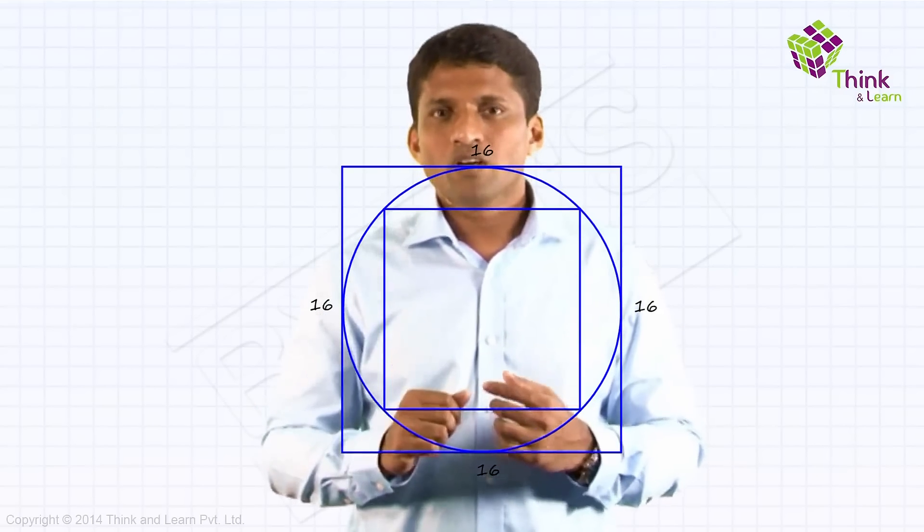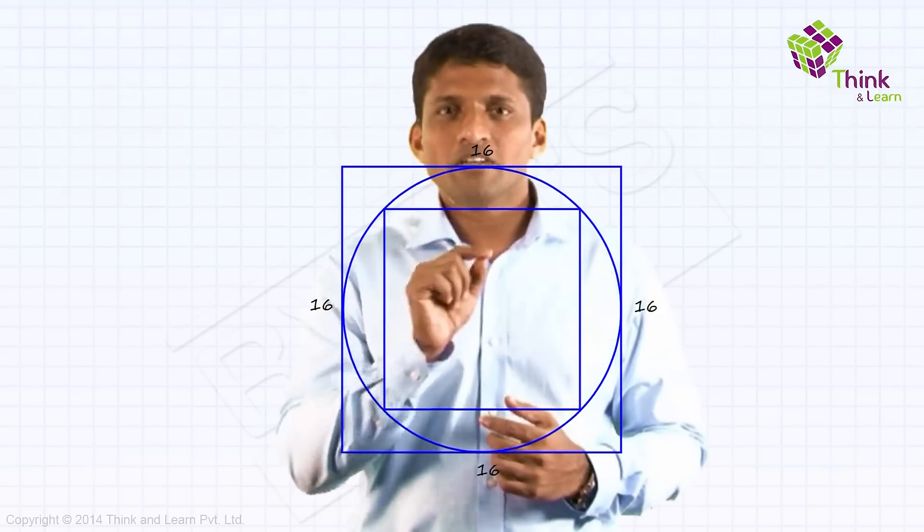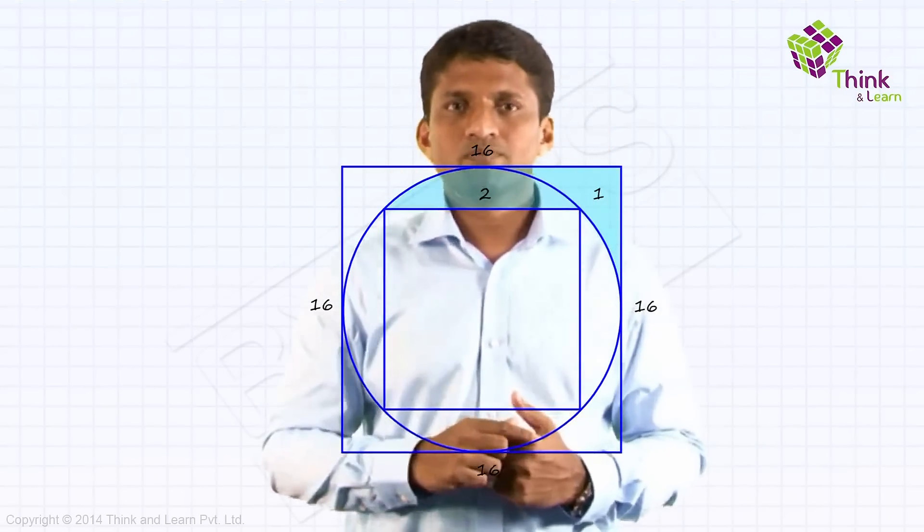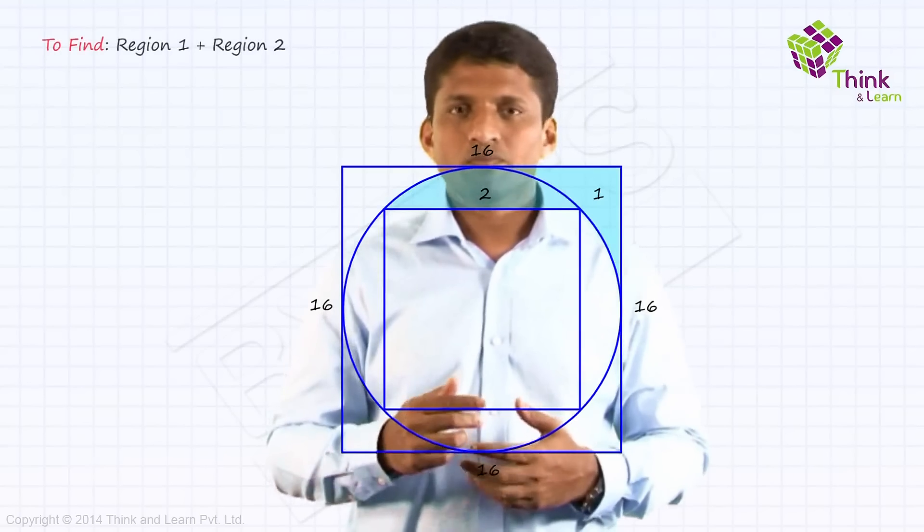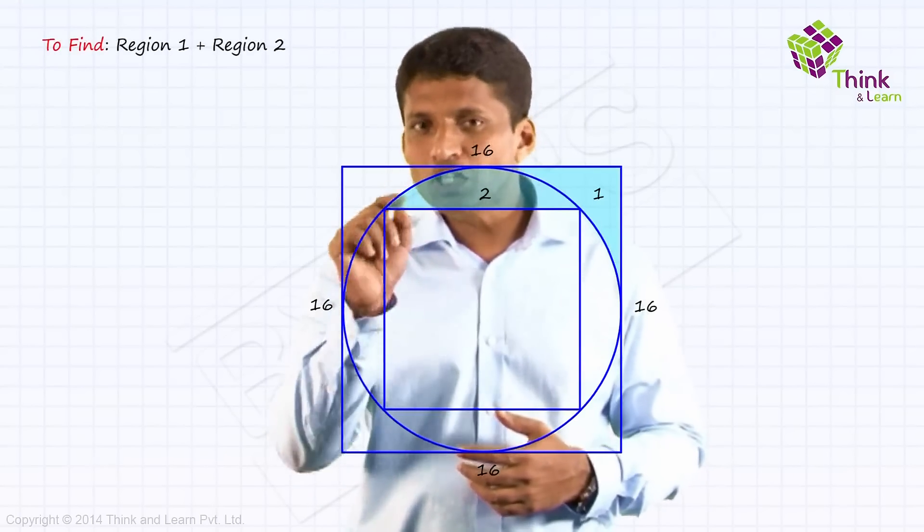Now in this diagram, two regions are shaded. Let me number it as 1 and 2. You have to find region 1 plus region 2.